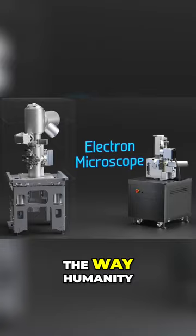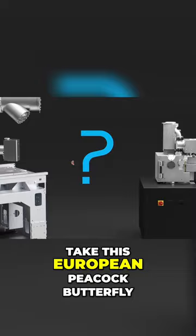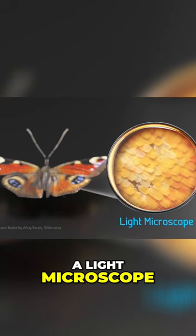Don't believe us? Take this European peacock butterfly for example. When we zoom in on its wing using a light microscope, we see that it's composed of tiny overlapping scales.